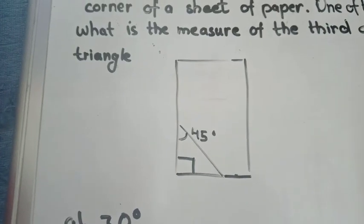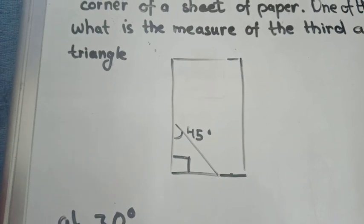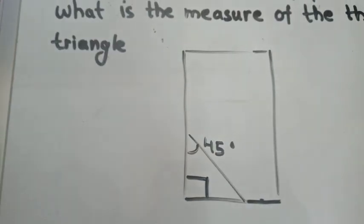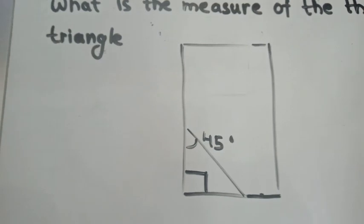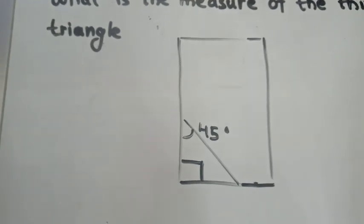A sheet of paper will always be a rectangle or a square. So, by cutting the corner of the sheet of paper, we will get a right angle triangle.